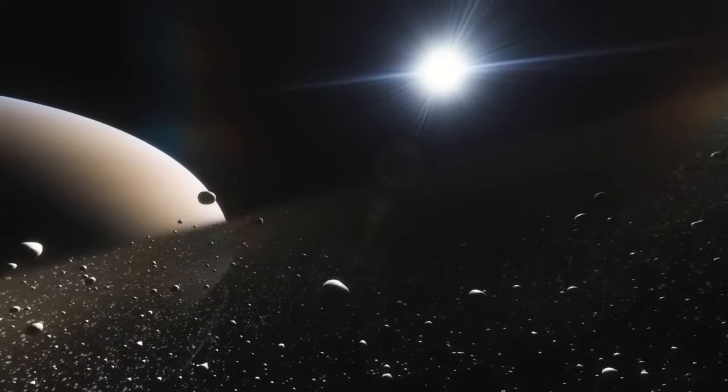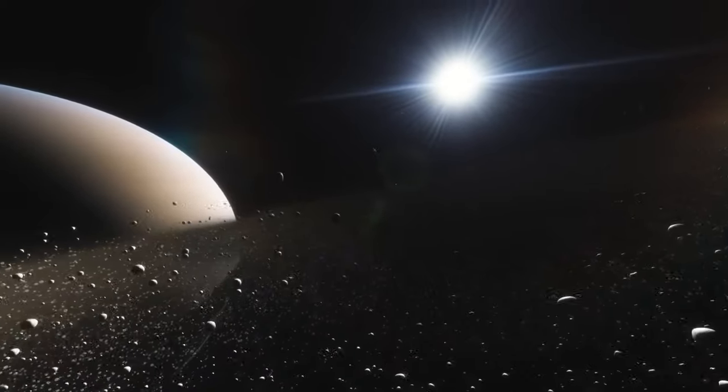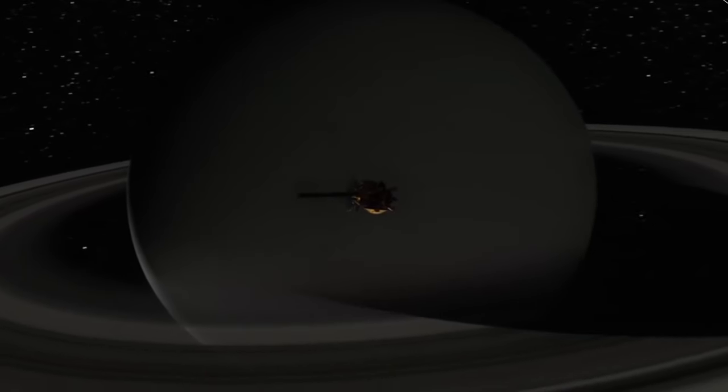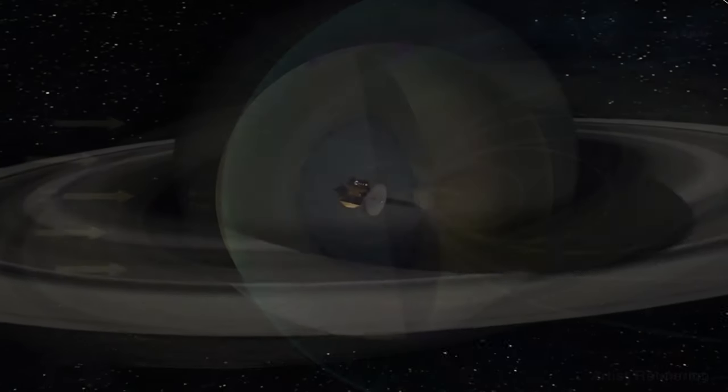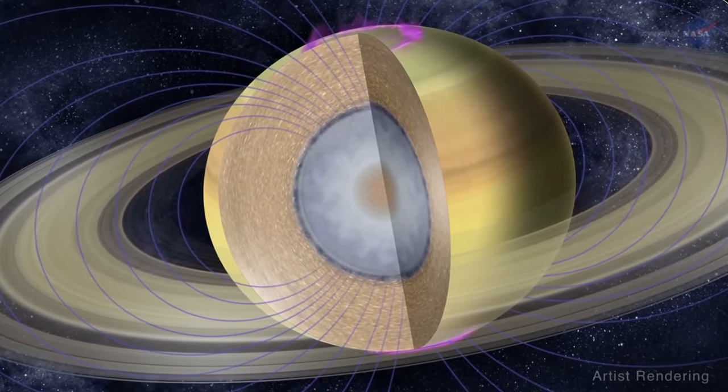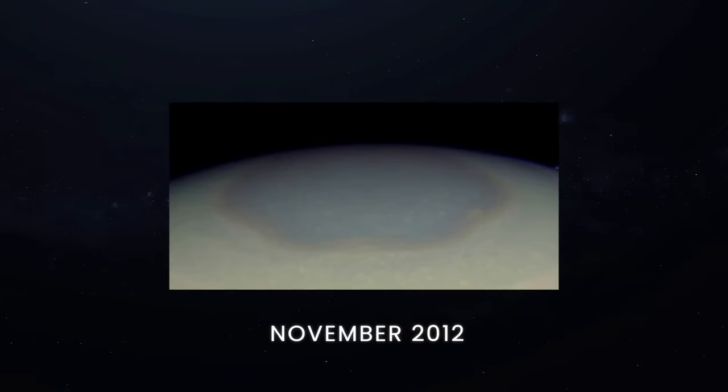Every 30 minutes, Saturn loses an Olympic swimming pool's worth of water from its rings due to ring rain, a cascade of icy particles that descends onto the planet's atmosphere. This ring rain consists of various chemicals, including water, butane, propane, methane, ammonia, and carbon monoxide.